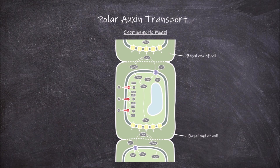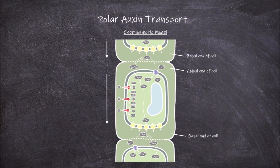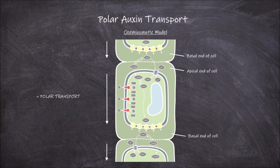Because the auxin leaves through the basal portion of the cell, it is then taken up into the next cell at the apical end, and it is again primarily able to leave through the basal end. This creates a directional movement downwards in the plant — apically from the shoot to basally in the root tip. This unidirectional movement is called polar transport, and when it pertains to auxin, it is called polar auxin transport.